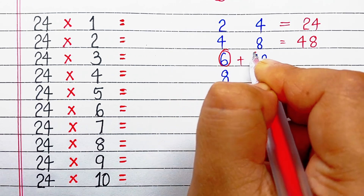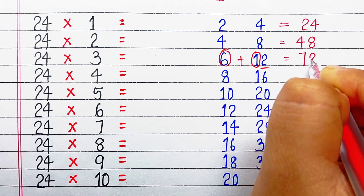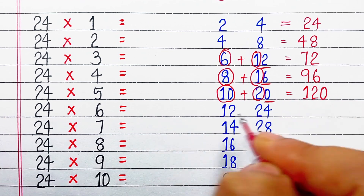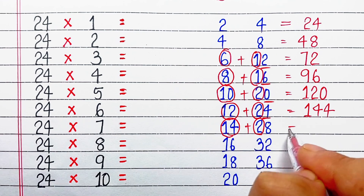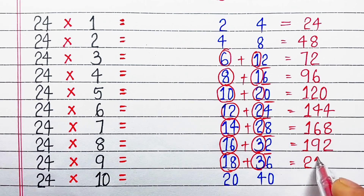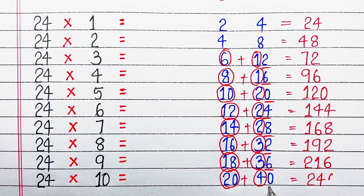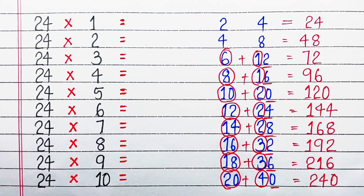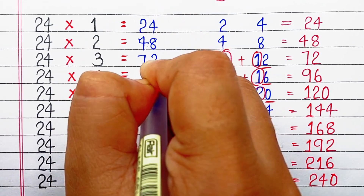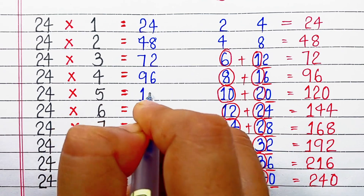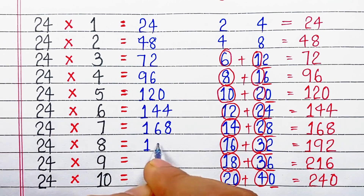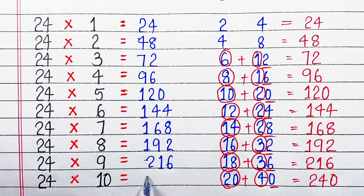Then we add the tens digit of the right number to the left number and write the unit digit as it is. So: 6 plus 1 is 7, write 2, giving 72. Next 8 plus 1 is 9, write 6, giving 96. Then 10 plus 2 is 12, write 0, giving 120. Then 12 plus 2 is 14, write 4, giving 144. Then 14 plus 2 is 16, write 8, giving 168. Then 16 plus 3 is 19, write 2, giving 192. Then 18 plus 3 is 21, write 6, giving 216. Then 20 plus 4 is 24, write 0, giving 240. So let's recite: 24 ones are 24, 24 twos are 48, 24 threes are 72, 24 fours are 96, 24 fives are 120, 24 sixes are 144, 24 sevens are 168, 24 eights are 192, 24 nines are 216, 24 tens are 240.